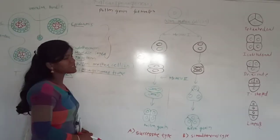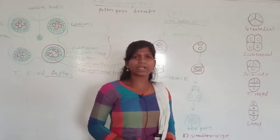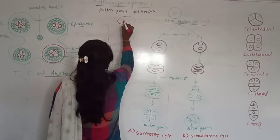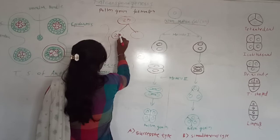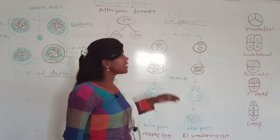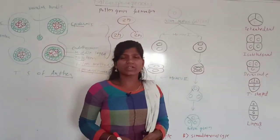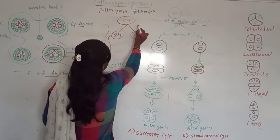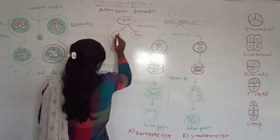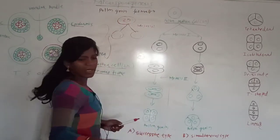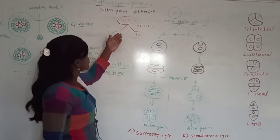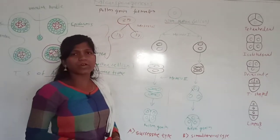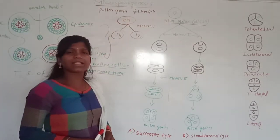Now, that pollen mother cell undergoes meiotic division. What is meiotic division versus mitotic division? In mitotic division, the parent cell, which is diploid, undergoes mitosis and produces two daughter cells with the same chromosome number as the parent cell. Therefore, it is called equational division. In meiosis, the parent cell undergoes a reduction division first — meiosis I — producing haploid daughter cells. The chromosome number of the parent cell and daughter cell are unequal, with the daughter cell having half the chromosomes. Therefore, it is called reduction division.